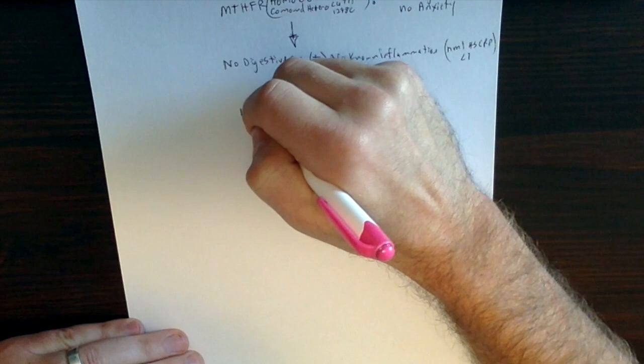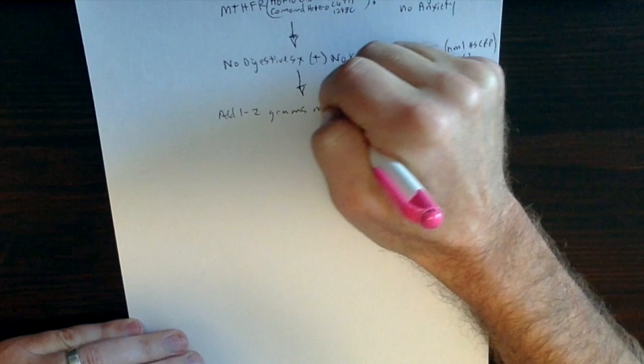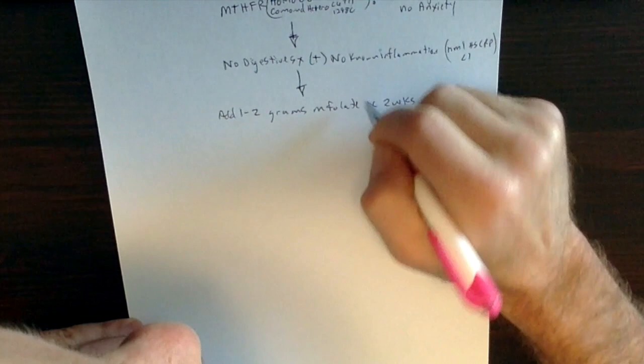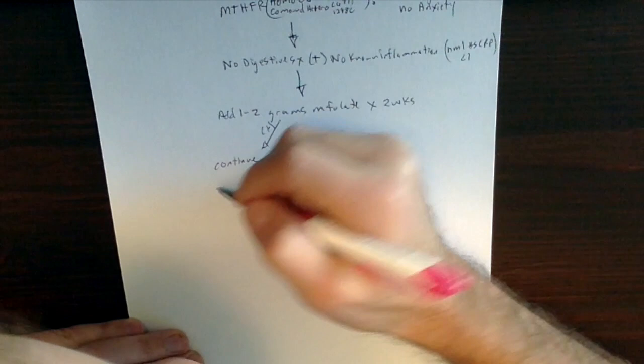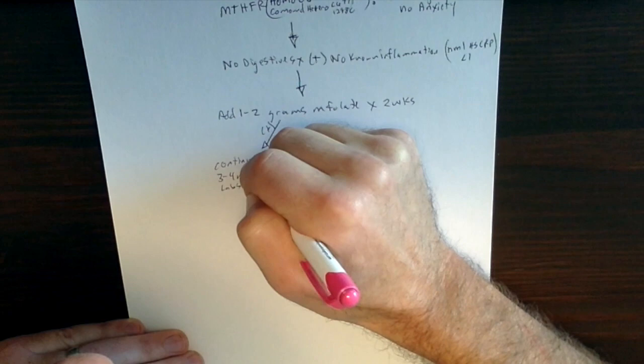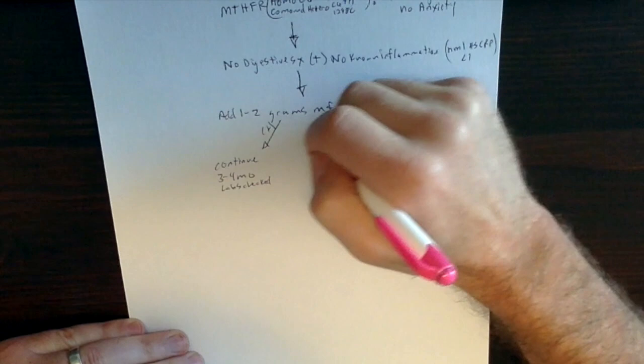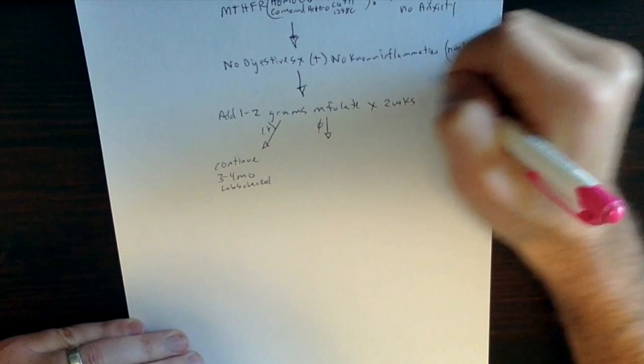So then if all those prerequisites are met, then you're going to start, you're going to add one to two grams methylfolate, then we'll say times two weeks, forgive my handwriting here that says folate. And then see how's that going to go. So if you feel great, okay, then just continue, and you'll continue that for, you know, let's say three to four months, and then you should have some labs checked. And of course there'll be specific references to which labs you should be considering getting to make sure things are in balance. But in this case, there's no change, which we're going to come back to that one.